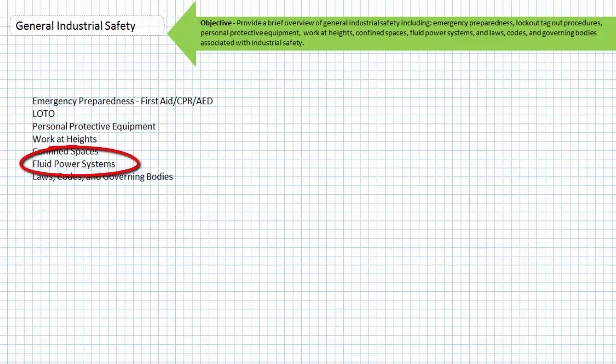Our final special case industrial safety scenario is that of fluid power systems. Fluid power systems are found in most industrial scenarios because of their incredible force and holding power. Fluid power systems are divided between hydraulic and pneumatic systems. Hydraulic systems use liquid as the transfer medium whereas pneumatic systems use air.